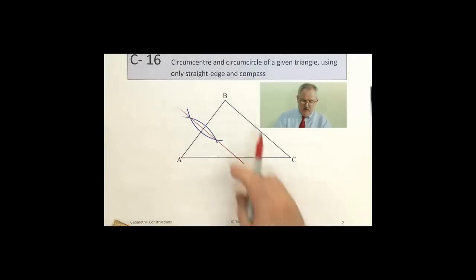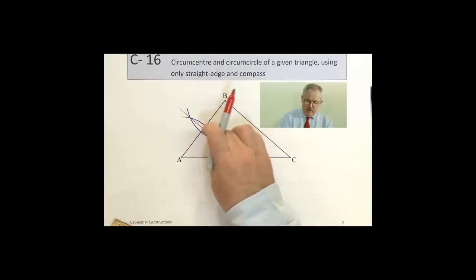I can find a line perpendicular to AB, going through the center of AB. That's going to be perpendicular to AB there.